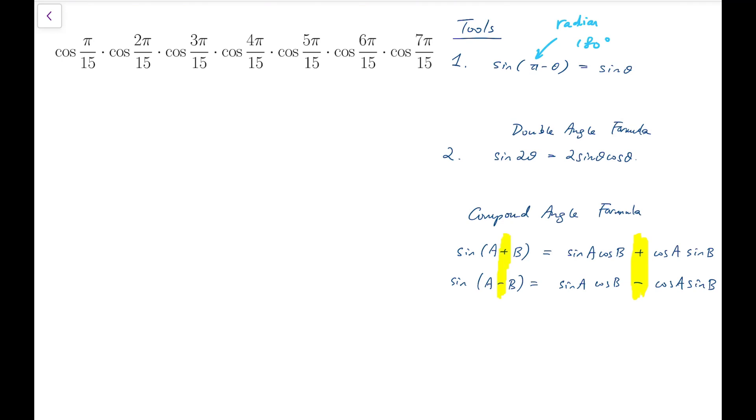Now, when the two angles are pi and theta, then sine a becomes sine pi, which is 0, and cos theta, but that's not important because 0 times anything is 0.